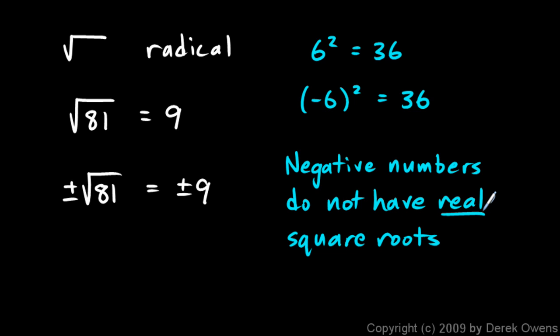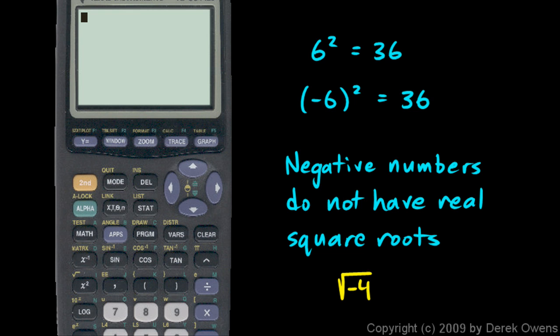Negative numbers. And by real, I mean real numbers. There are no real numbers that are the square roots of negative numbers. So if you try to compute, for example, if you try to calculate the square root of negative 4 and you punch that into the calculator, it will probably give you an error of some kind. And we'll take a look at this on the calculator.